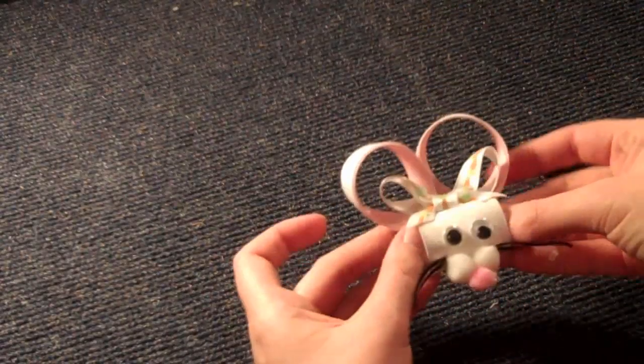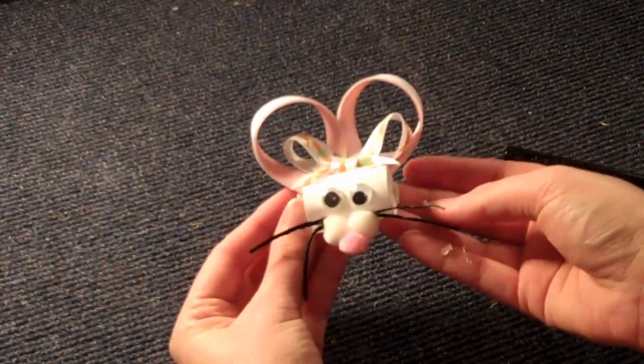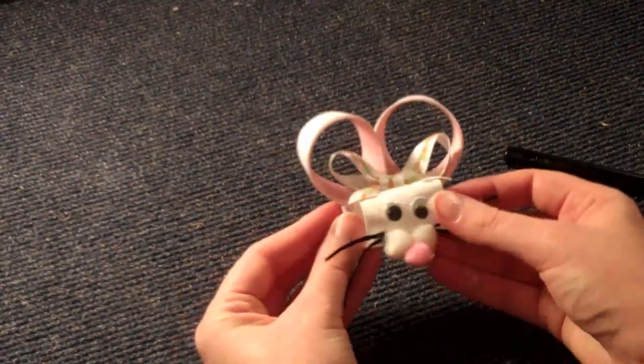Now don't worry about your glue strings, because you can get those off with a swipe of this. Alright. There is our little Easter girl hair clippy. Now we're going to go ahead and make the carrot.